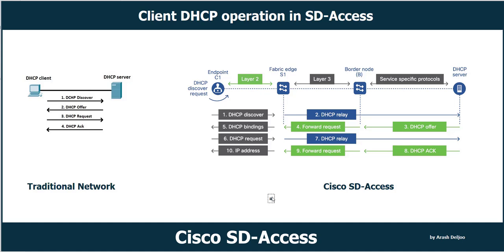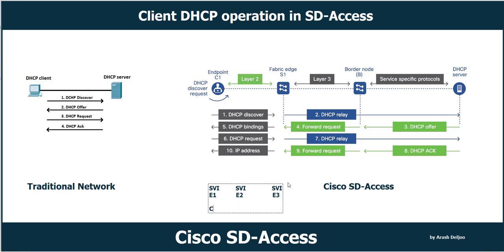The anycast gateway means that if we have edge 1, edge 2, and edge 3 devices, we can define the same IP address as the anycast gateway on all of them. This is one of the benefits of Cisco SD Access fabric. On each edge node we have an SVI (Switch Virtual Interface) — for example for VLAN 10 — and this SVI's IP address is the same on all edge nodes. This means that when a client roams from one edge to another, it doesn't need to change its gateway IP address, because the SVI IP address is the same on all devices.